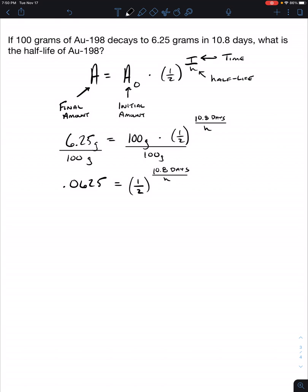Now, we need to solve for a variable that's in an exponent's position. To do that, we're going to take the log of both sides of the base values. When we take the log of both sides, that's going to allow us to pull down the exponent value, because it's the inverse function of an exponent. So we're going to take the log of 0.0625, and we're going to set it equal to the log of one half. And now we have pulled down 10.8 days over H.